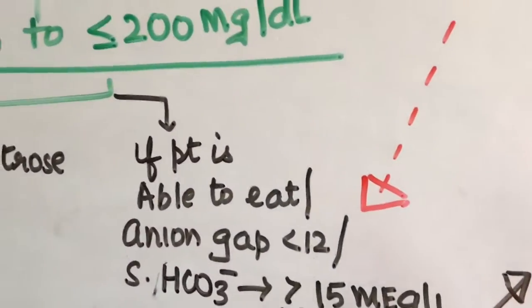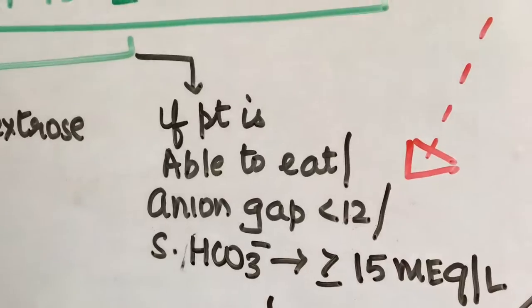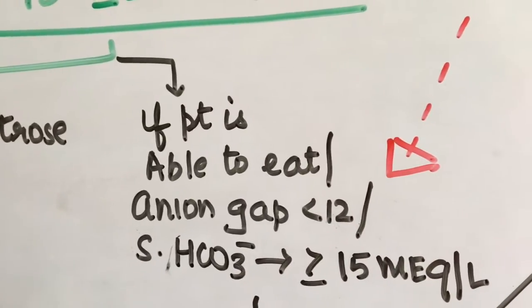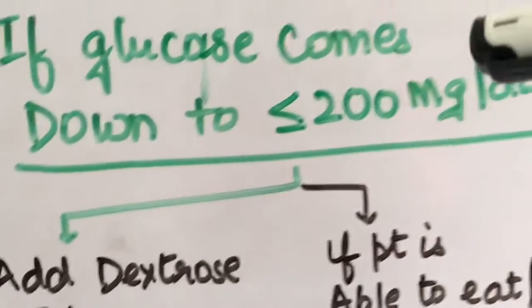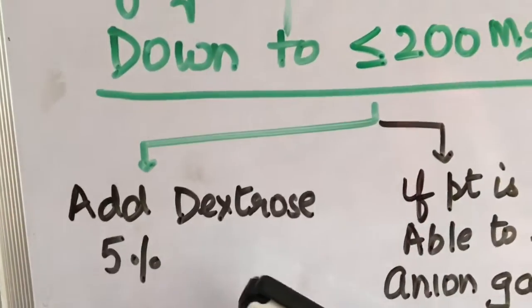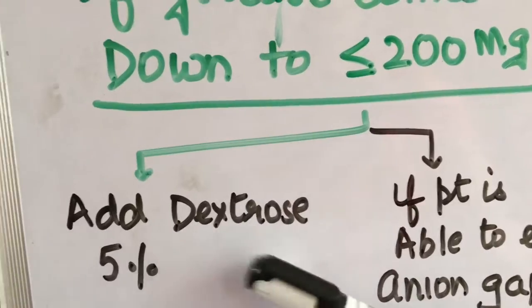So I already told you one situation in which we can shift to the subcutaneous insulin provided the patient is able to eat, or anion gap is less than 12, or serum bicarbonate is more than or equal to 15. On the other side, if it is less than 200, you can add 5% dextrose to it. So this was the algorithm which was given in UWorld and I have simplified it for your convenience.